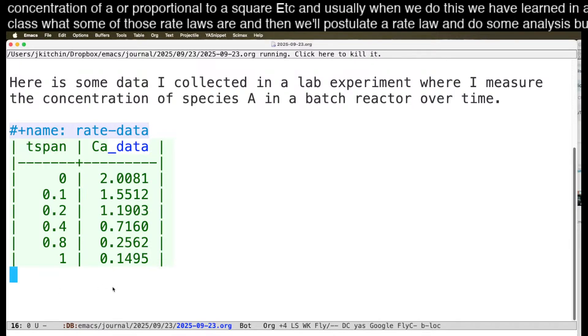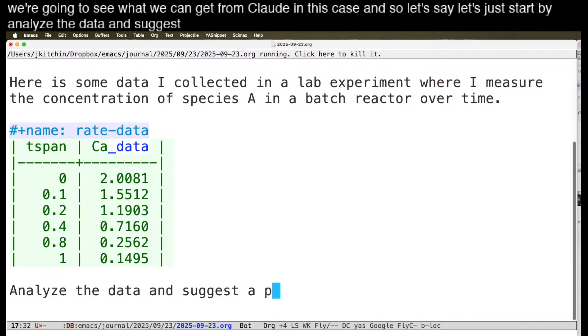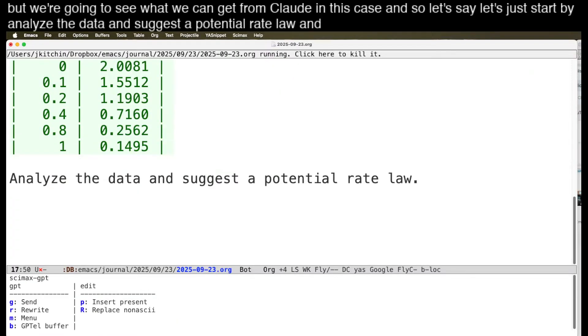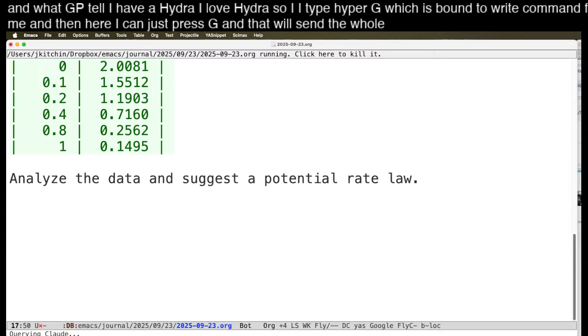But we're going to see what we can get from Claude in this case. And so let's say, let's just start by analyze the data and suggest a potential rate law. And with GPTEL, I have a Hydra. I love Hydras. So I type Hyper-G, which is bound to write command for me. And then here I can just press G, and that will send the whole buffer to Claude. And then we'll see what comes out of it.